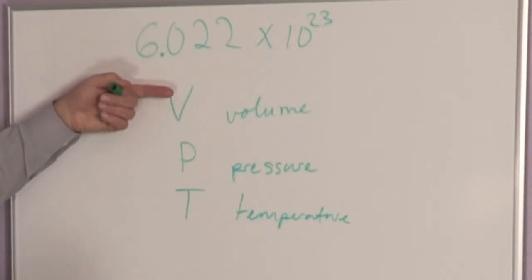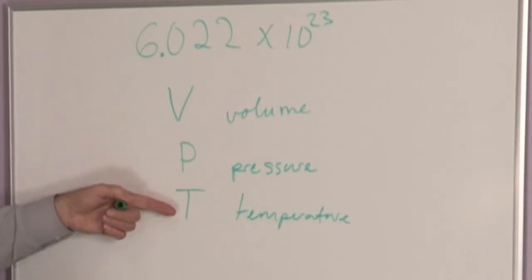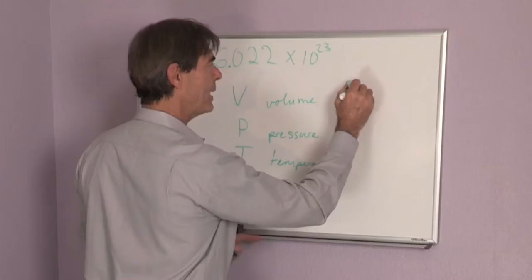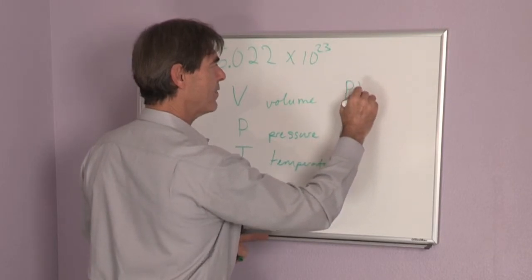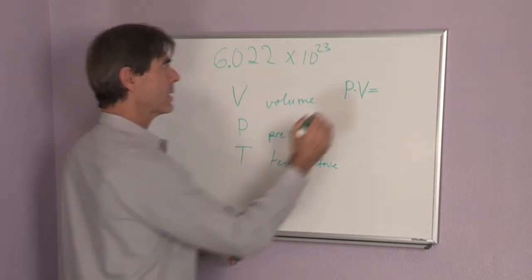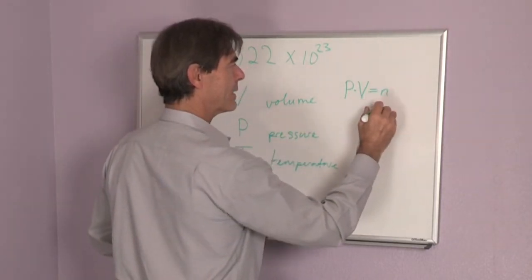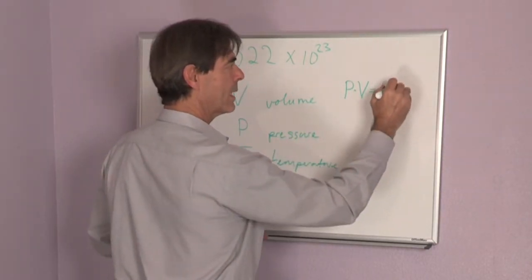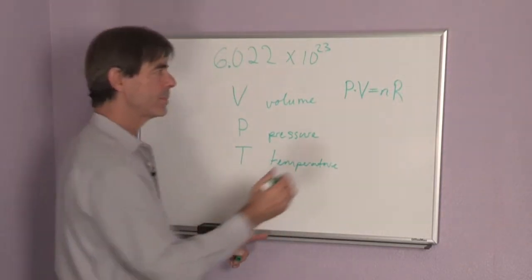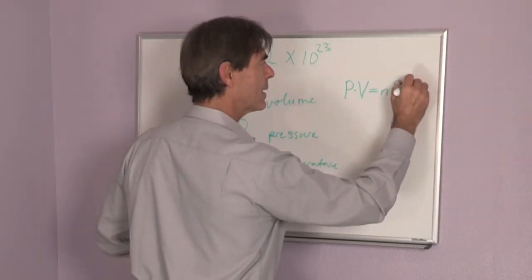The formula to measure volume, pressure, temperature with one mole is P times V equals n, that's the number of moles, times a constant called R times T.